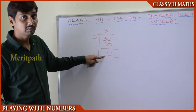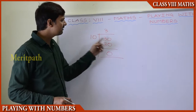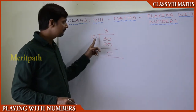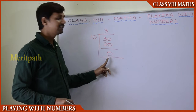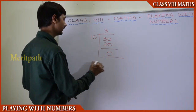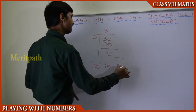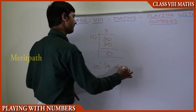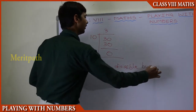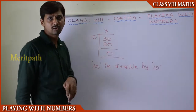This is called the divisible property. When we take a number and divide it with some other number and we get 0 as a remainder, we call it divisible. For example, 30 is divisible by 10. This is the concept.